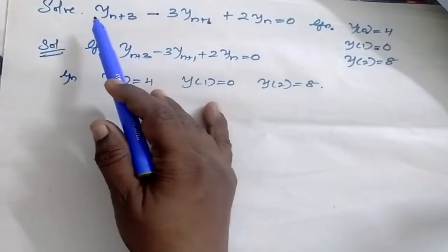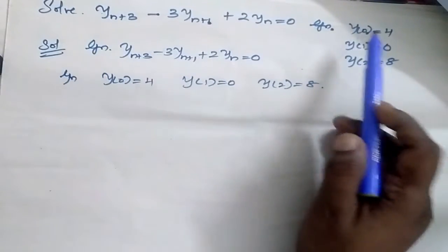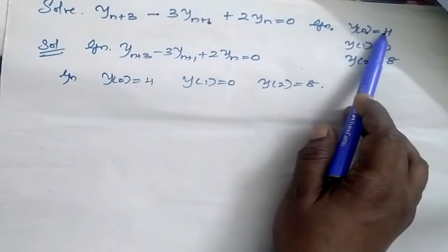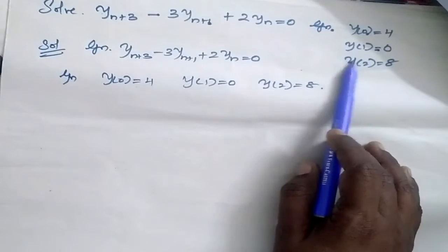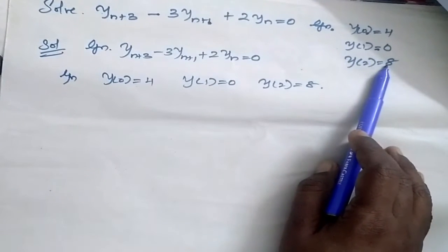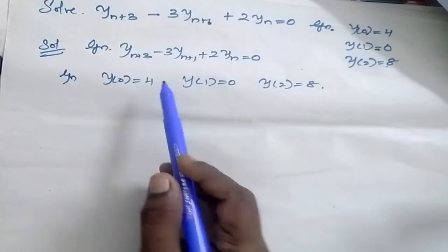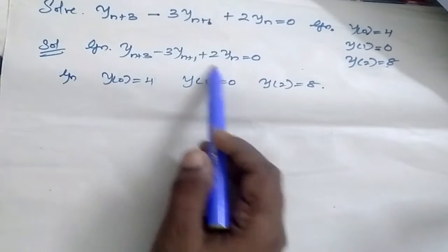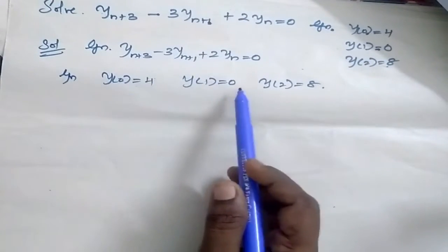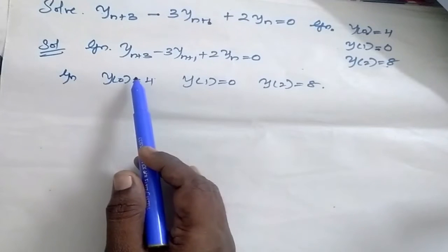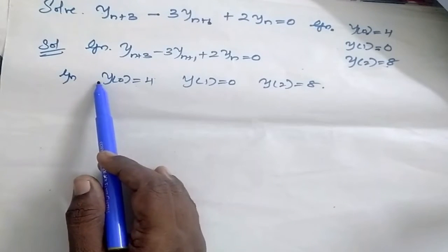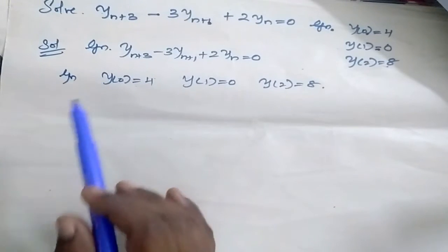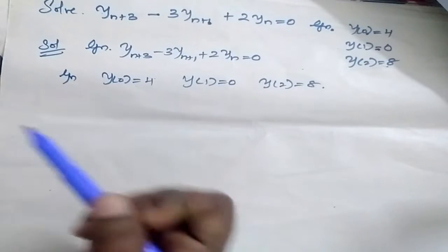Solve the given equation where y0 is equal to 4, y1 is equal to 0, and y2 is equal to 8. We are going to solve this equation using Z-transform and inverse Z-transform.